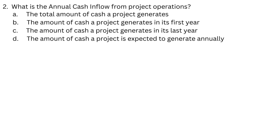Question 2: What is the annual cash inflow from project operations? a. The total amount of cash a project generates. b. The amount of cash a project generates in its first year. c. The amount of cash a project generates in its last year. d. The amount of cash a project is expected to generate annually.